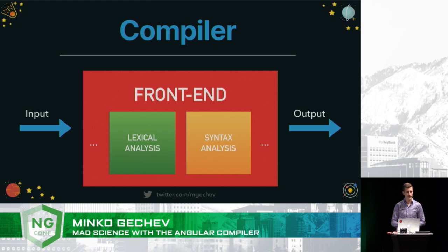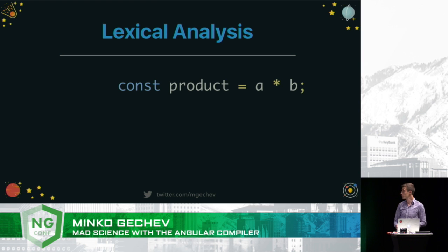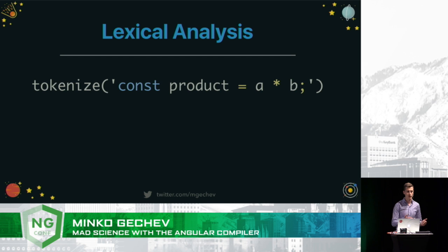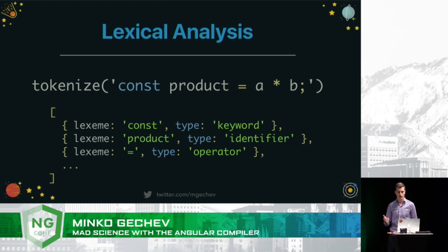Here are the typical modules it has. It usually has a module for lexical analysis and a module for syntax analysis. This may sound a little bit fancy at first, but it's actually something quite simple. So, we have our program, which is nothing more than just a string — the string `const product equals A multiplied by B`. We're going to process it using our function which implements the lexical analyzer. It is going to produce a list or stream of tokens, where each token is an object with two properties: lexeme, which is the substring of the program that this token represents, and also a type, which can be either a keyword, an identifier, operator, literal, or whatever.